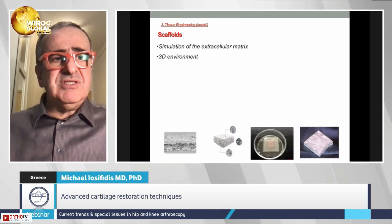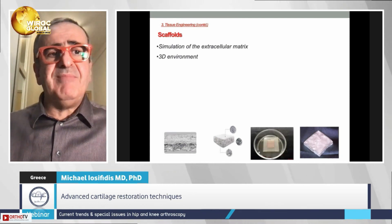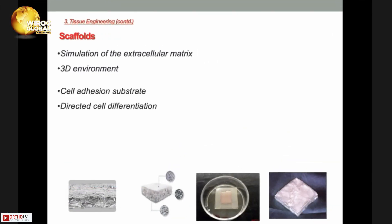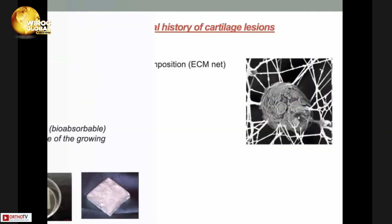Regarding scaffolds, they must simulate the extracellular matrix and provide a three-dimensional environment so cells can adhere to the substrate. The construct must direct exactly the differentiation of the cells. After transplantation, the scaffold must degrade — so we call it bioabsorbable — and be replaced by the extracellular substance of the grown cells.